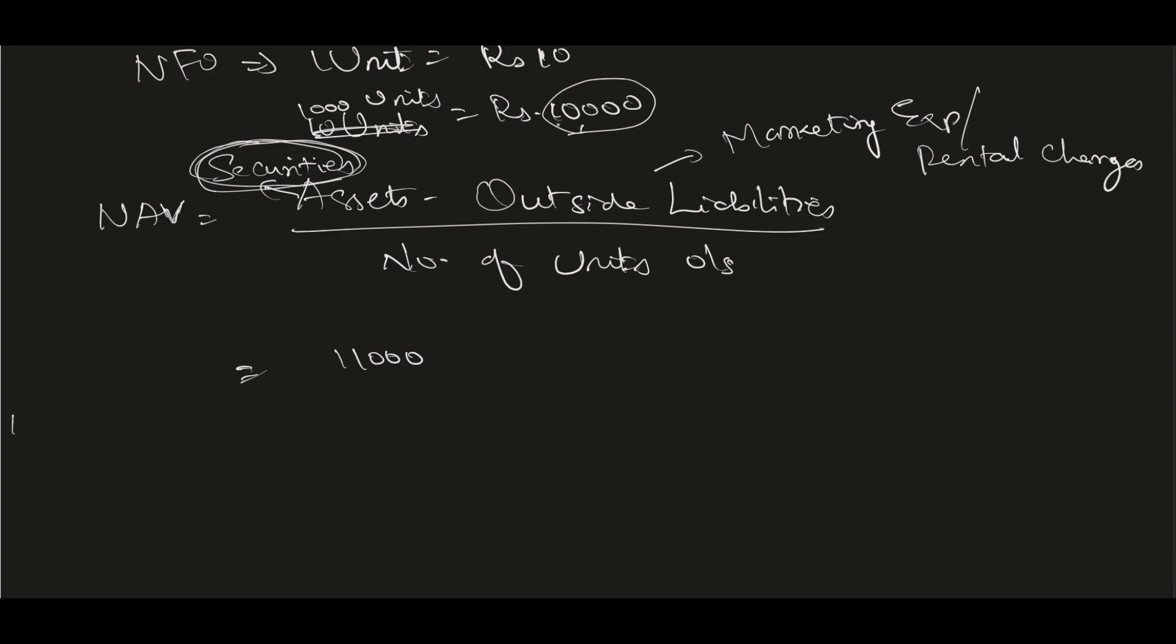So this 10,000 has become 11,000, minus outside liabilities, let's say 500 rupees, divided by number of units outstanding. Initially it was 1,000 units. Now imagine some more people applied for units after the NFO because it's an open-ended fund.